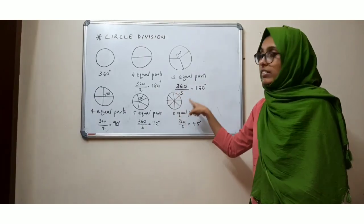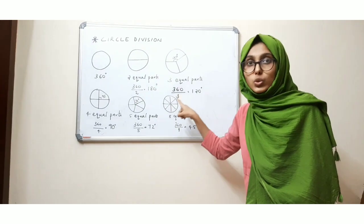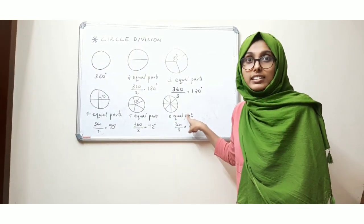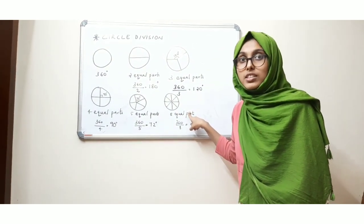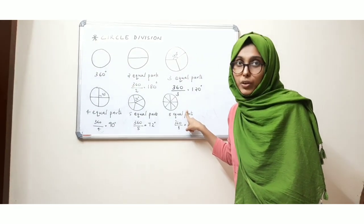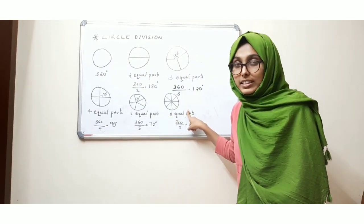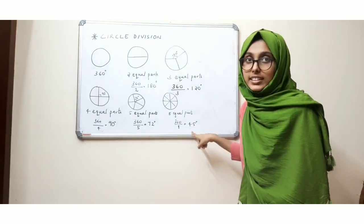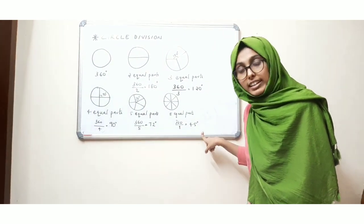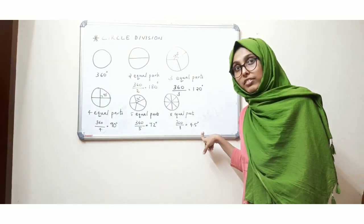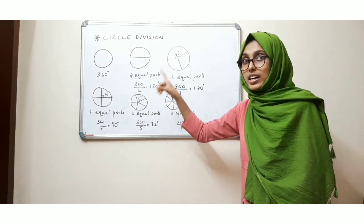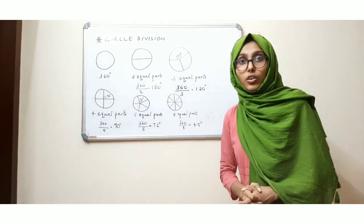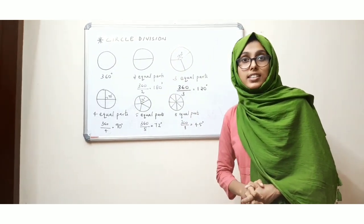Likewise, I have divided the circle into eight equal parts. So one part will be of angle 360 divided by eight, that is 45 degrees. This is how we can get the angle of a circle division.